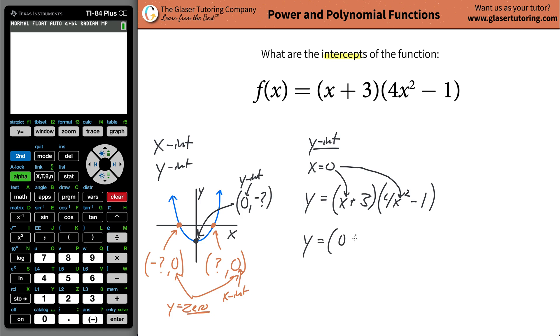So y will equal now (0 + 3) times (4 × 0² - 1). So y will equal, this will be 3 in here. Zero squared is just zero, zero times four is zero. So that's going to be 0 - 1. Zero minus one is simply negative one. And three times negative one is going to be negative three.